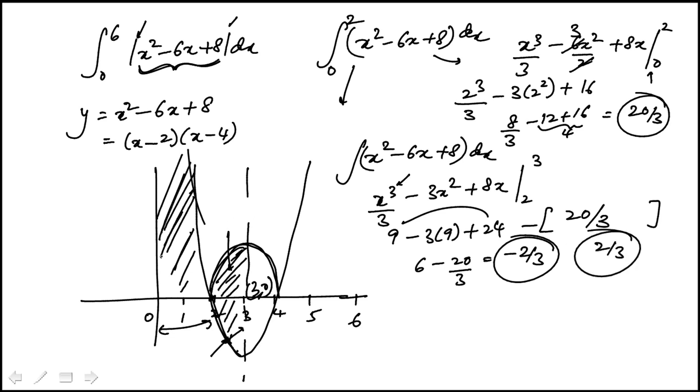So these two, this piece, and that is twenty over three plus two thirds. That's twenty two over three.